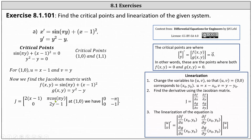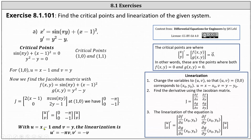Next, we evaluate the Jacobian at the critical point one comma zero, which gives us the two by two matrix with entries zero, negative pi, zero, negative one. Therefore, the linearization is the derivative of the vector uv equals that Jacobian matrix times the vector uv. With u equal to x minus one and v equal to y, the linearization is u prime equals negative pi v, and v prime equals negative v.